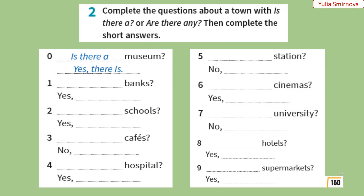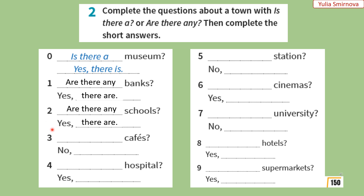Let's do exercise number 2 on the same page. Complete the questions about a town with 'is there a' or 'are there any', then complete the short answers. Завершіть питальні речення про місто та дайте короткі відповіді. 1. Are there any banks? Yes, there are. — Чи є тут банки? Так, є. 2. Are there any schools? Yes, there are. — Чи є тут школи? Так, є. 3. Are there any cafes? No, there aren't. — Чи є тут кафе? Ні, немає. 4. Is there a hospital? Yes, there is. — Чи є тут лікарня? Так, є.